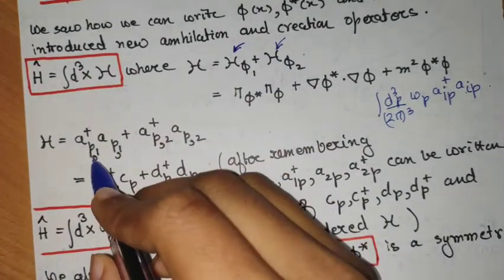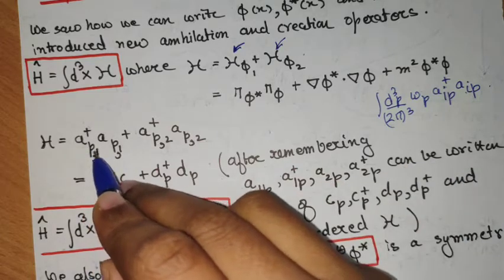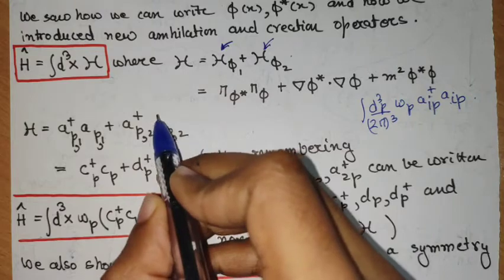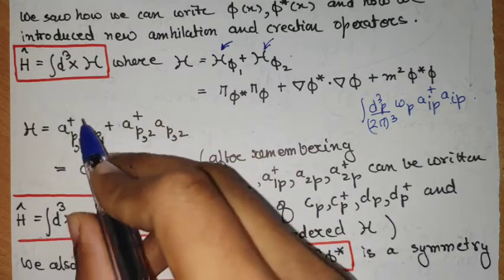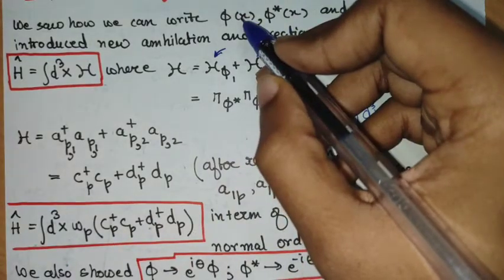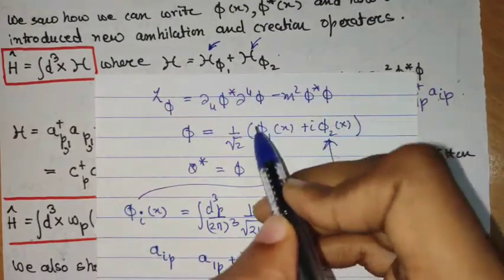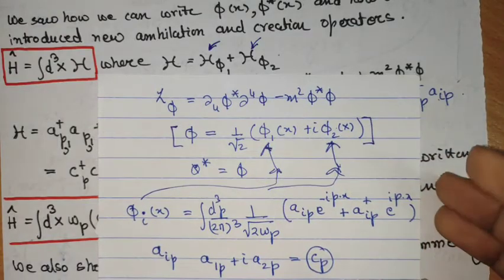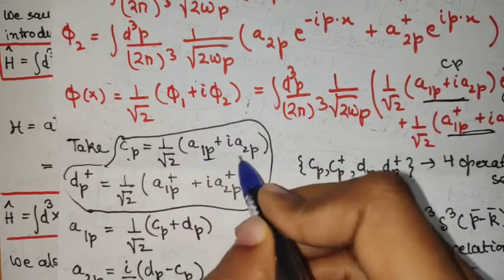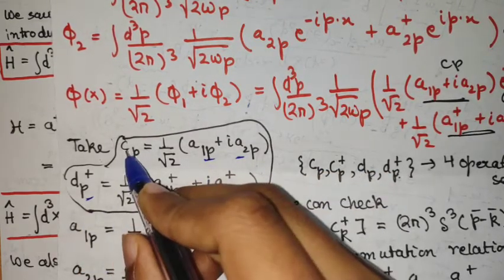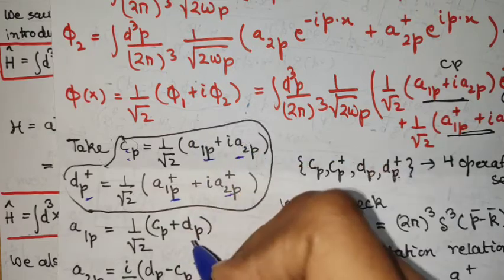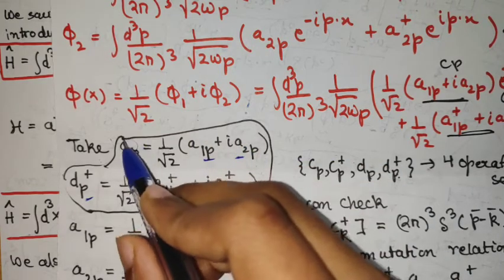We know that a 1 p, a 2 p, a 1 p dagger, and a 2 p dagger are related to the creation and annihilation operators of the complex Klein-Gordon field through this relation. So a 1 p and a 2 p are related in this form: c p is written in this form and d p dagger is written in this form. From this, we can obtain c p dagger and d p, and finally solve for a 1 p, a 2 p, a 1 p dagger, and a 2 p dagger in terms of c p, c p dagger, d p, and d p dagger.